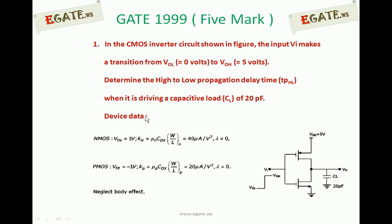The device data given is: for NMOS, threshold voltage VTN is 1V, and KN — which is μN times COX times W/L — is equal to 40 microamperes per volt squared. For PMOS, VTP is −1V, and the transconductance is 20 microamperes per volt squared. Lambda equals zero, meaning the channel length modulation parameter is zero. Neglect body effect.